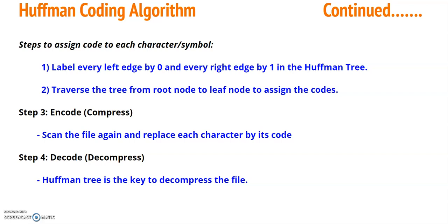The third step is Encoding, where we actually compress the given string — scan the file again and replace each character by its code. The last step is Decoding, also called the decompressed step. We use the Huffman tree as the key to decompress the file.